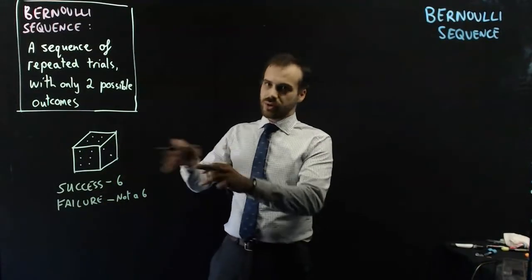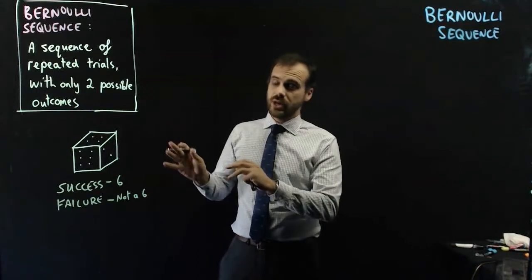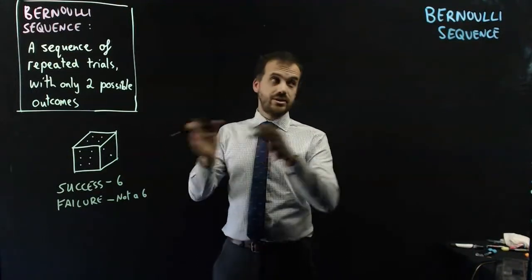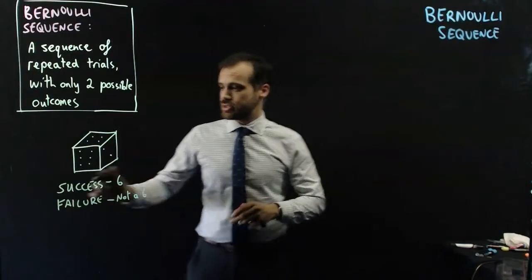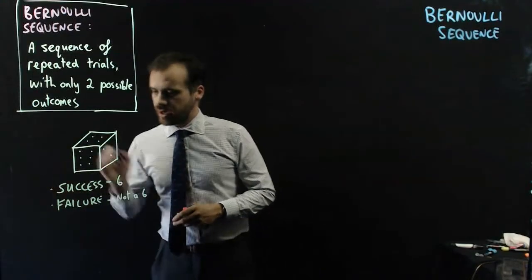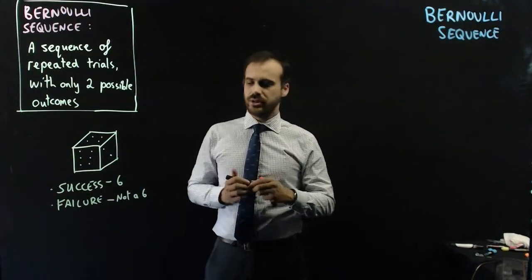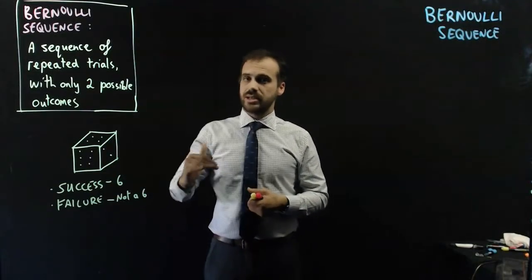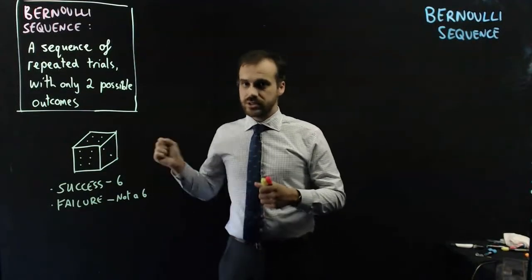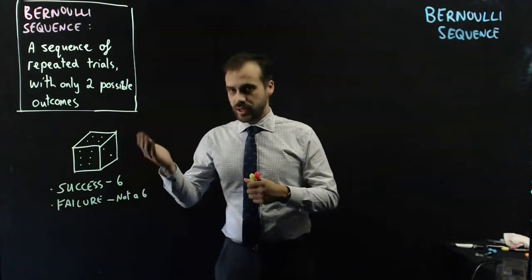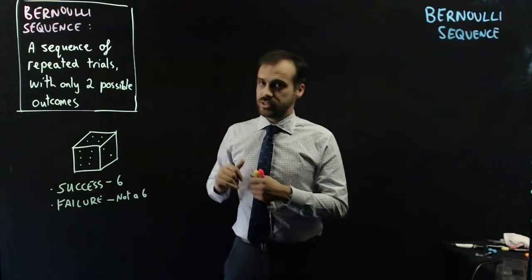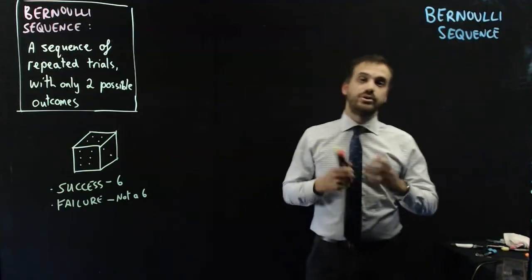And you can see, even though a dice has many different outcomes, I can set it up so that it's a Bernoulli sequence. As long as I decide one thing is going to be success and one thing is going to be failure. So now, let's do a little step-by-step to check that rolling a dice multiple times where six is success and not a six is failure is, in fact, a Bernoulli sequence.